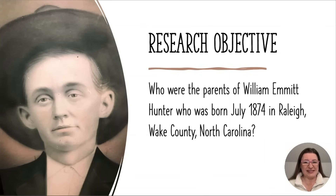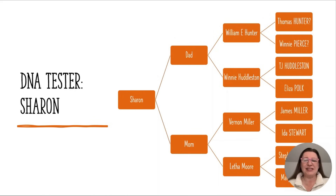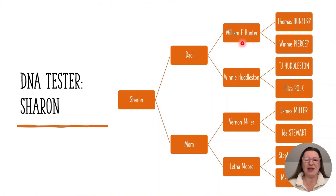My research objective for this case is: who were the parents of William Emmett Hunter, who was born July 1874 in Raleigh, Wake County, North Carolina? The test taker is his granddaughter Sharon, and you can see Sharon's tree here — we have Sharon, her dad, and then William Emmett Hunter. Two documents showed that William Emmett Hunter's parents were Thomas Hunter and Winnie Pierce, but I was not able to find any record of them, and this case remained unsolved until I used DNA.